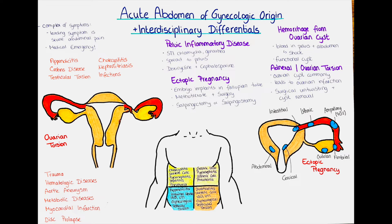Ectopic pregnancy is a disordered pregnancy where the fertilized egg does not implant in the uterus. Instead it implants in the fallopian tube, where it will start to grow and often cause a rupture of the fallopian tube. It usually presents with severe unilateral abdominal pain, vaginal bleeding, shock, and often referred pain to the shoulder, neck, and rectum. The regular menstruation is usually missed, and a pregnancy test may or may not be positive depending on how far the ectopic pregnancy has progressed.